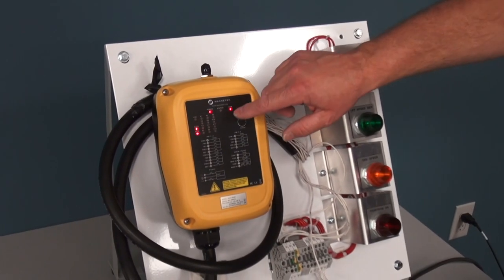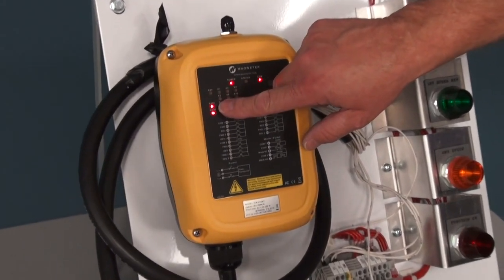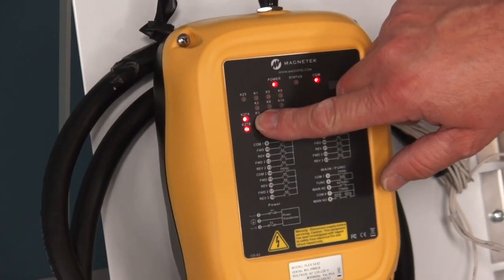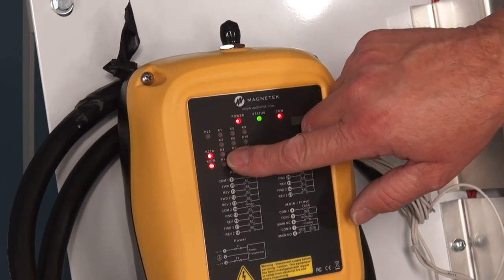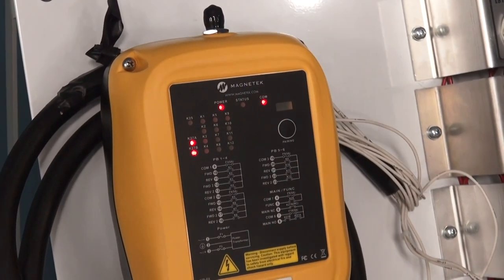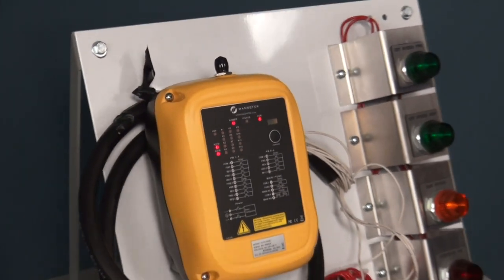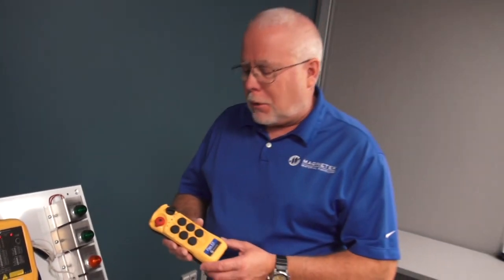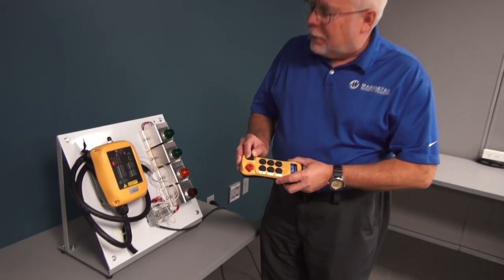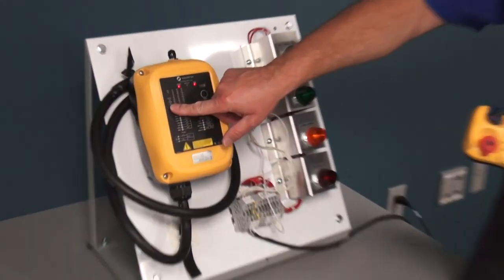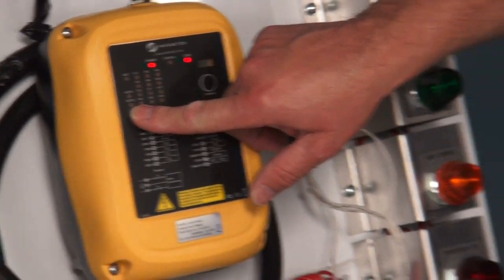First thing we want to look at, these two LEDs represent the mainline contactor output relays from the receiver. When these are red, that indicates the mainline contactor has been activated and the crane is powered up. If I turn the transmitter off, I have now powered down the crane. These LEDs are out.